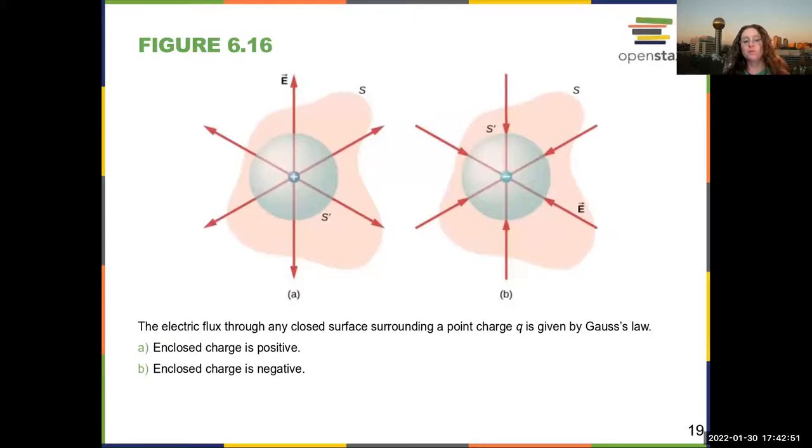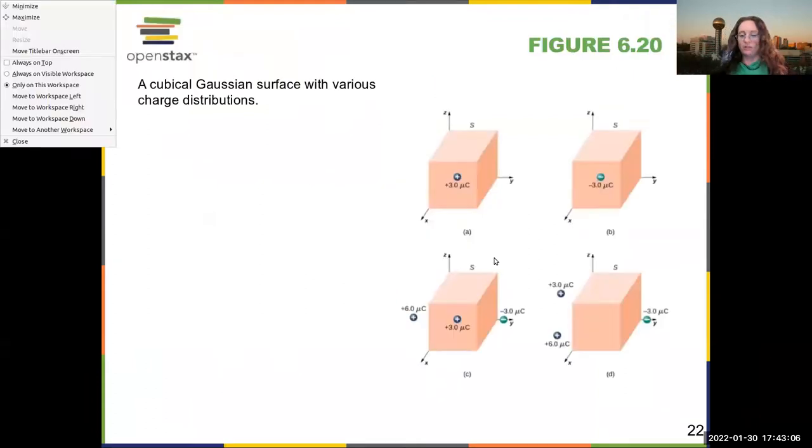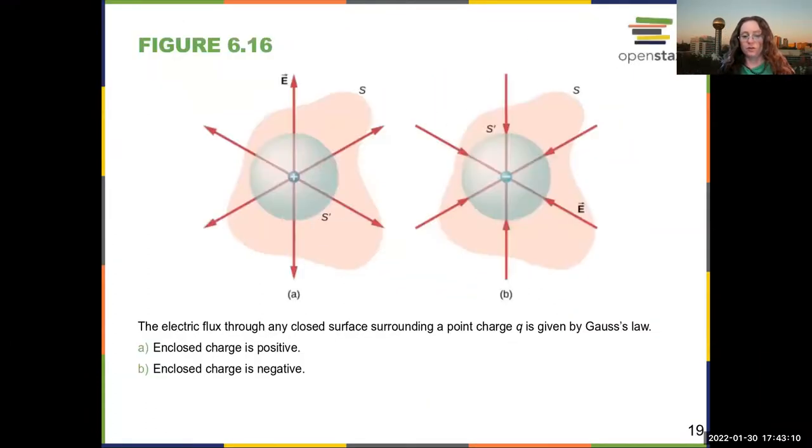So what Gauss's Law does is it relates the flux to the total amount of charge enclosed in a surface. So this is like you have an entire, it has to cover the entire surface. It has to be a closed surface, so like a pop can is a closed surface, but a sheet of paper is not a closed surface.